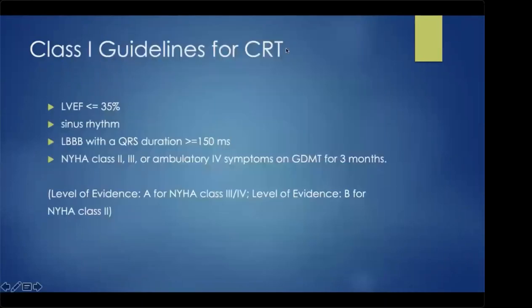Class 1 guidelines for CRT are for patients with an EF of 35% or less, sinus rhythm, and a wide left bundle branch block with symptoms of heart failure.